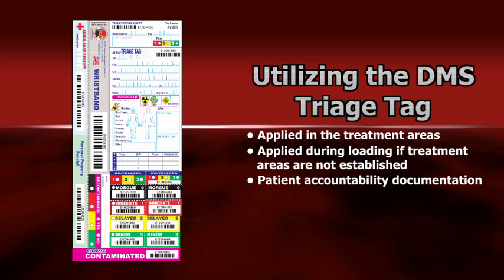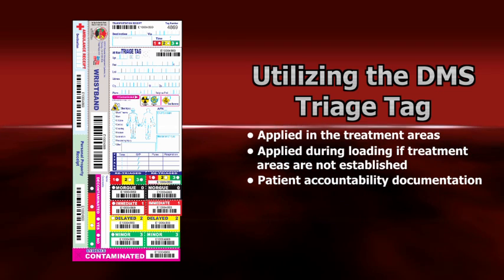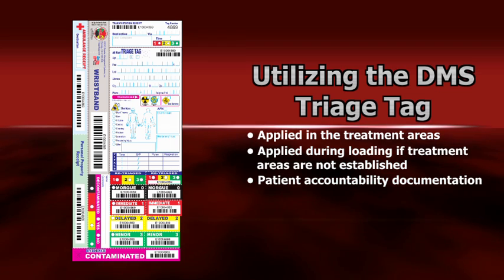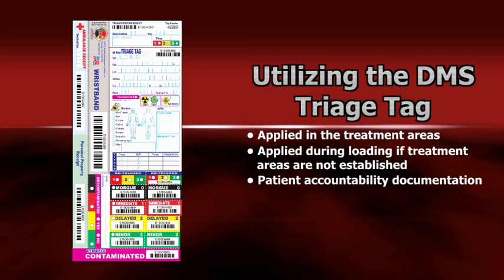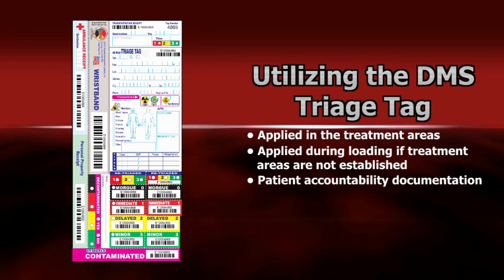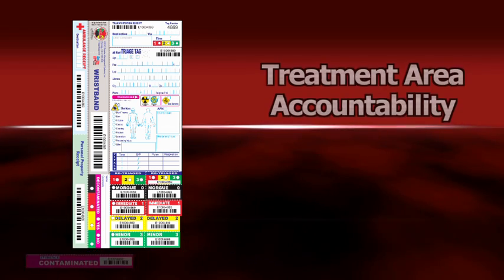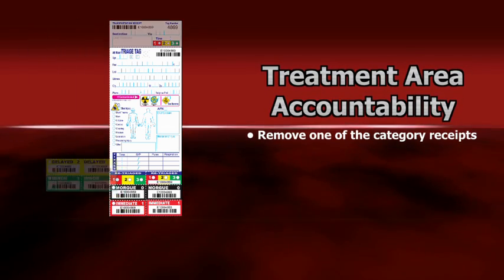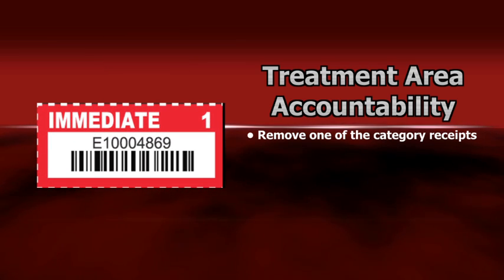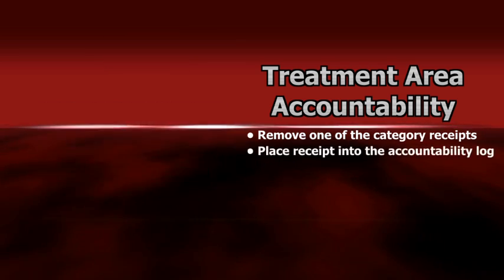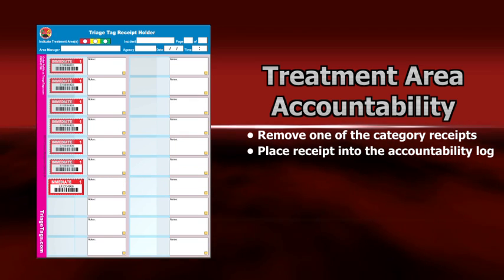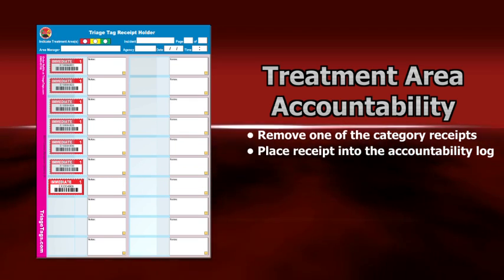Accountability documentation is an important component of proper MCI-MPI management and post-incident reporting. Patient accountability is achieved in the treatment areas, if established, by removing the outer colored category receipt that matches the patient's triage category. The receipt is placed in an accountability log sheet by the treatment area manager. The unique number on the receipt matches that of the triage tag, allowing the area manager to have a complete record of all patients that entered the treatment area.